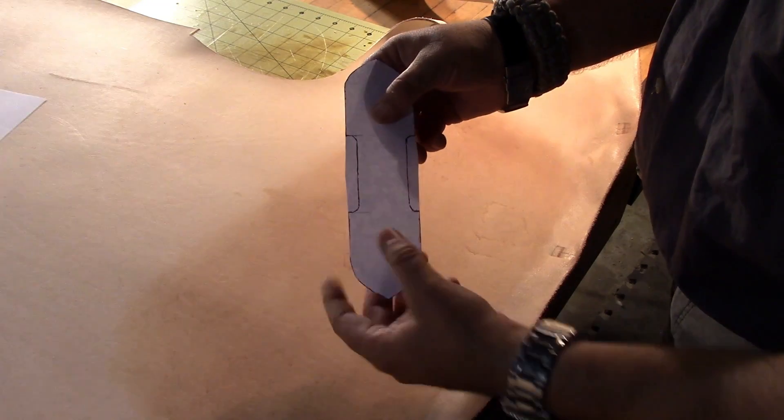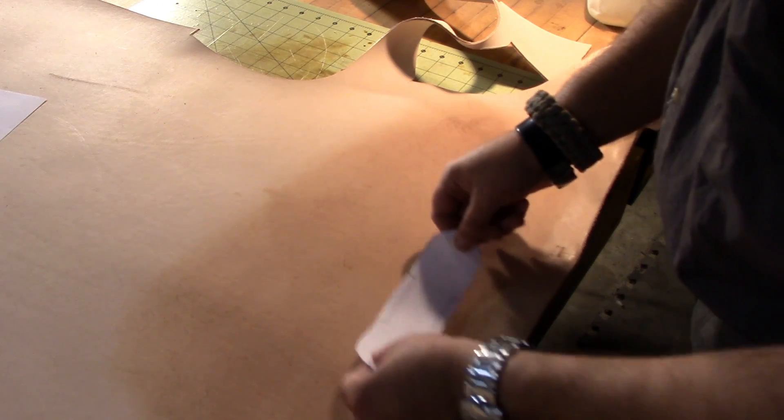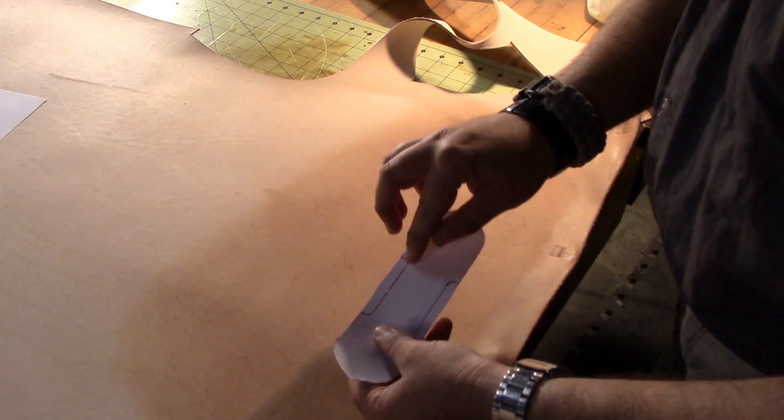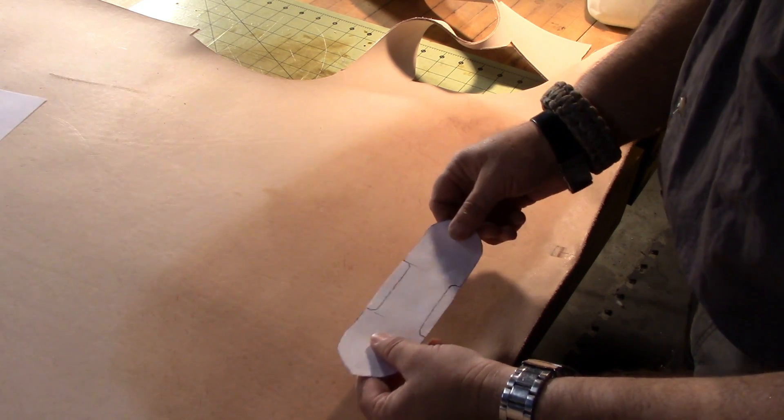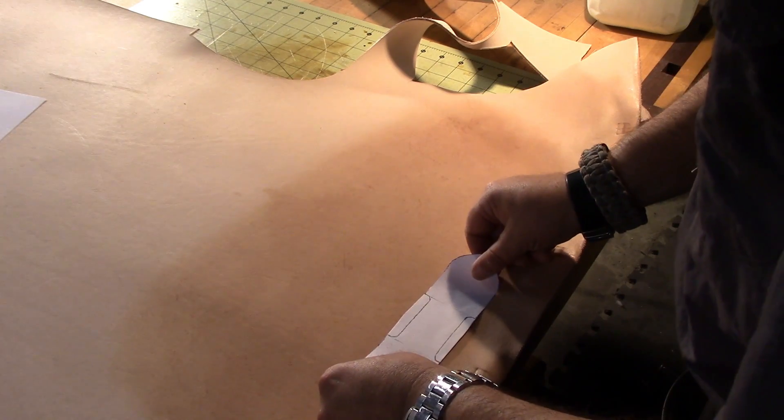I've cut out around the outside so that I can see on the leather where it's going to go and make sure I'm not getting any scars or any really bad spots in the leather. I didn't cut out this part, it doesn't need to be cut out. I can just trace over it.